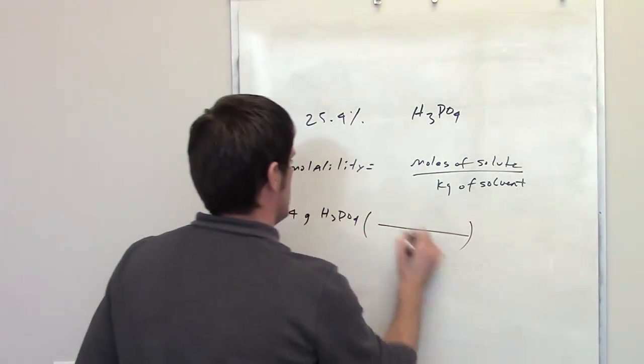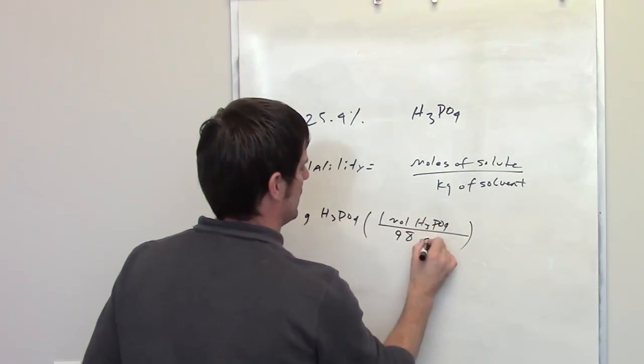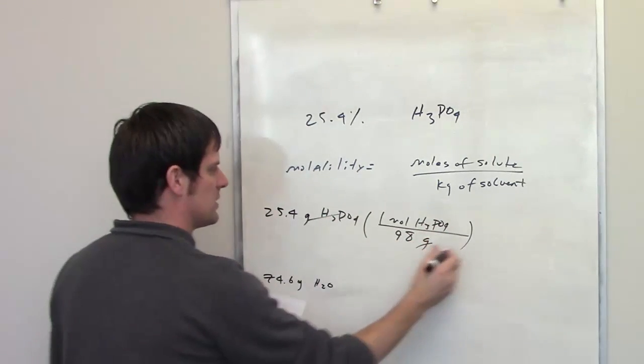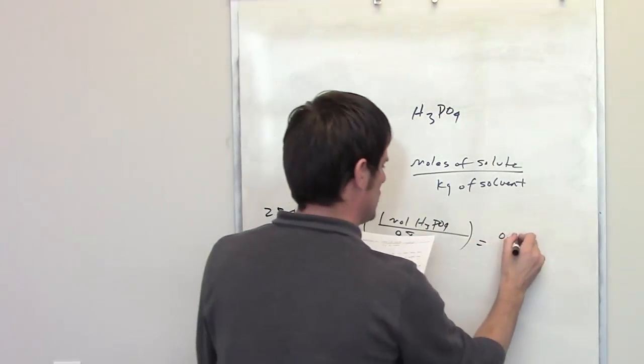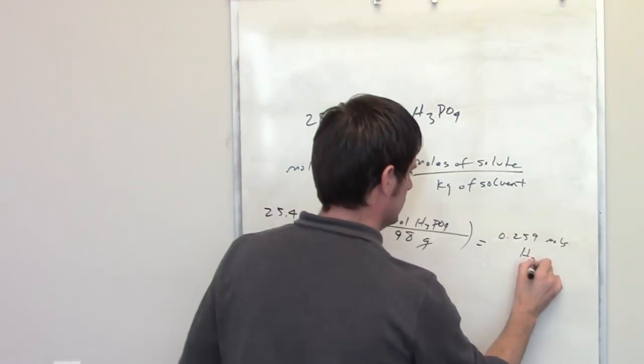One mole of phosphoric acid weighs 98 grams. The grams cancel each other out, and that gives me 0.259 moles of phosphoric acid, my solute.